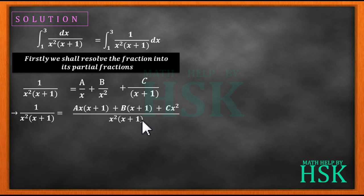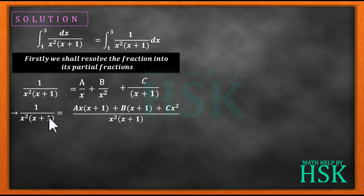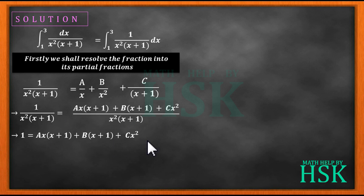The denominators on both sides are equal so we can cancel them, giving us the numerator equation which I will mark as equation number 1: 1 equals A·x·(x+1) plus B·(x+1) plus C·x squared. This expression will help us calculate the values of A, B, and C.